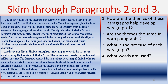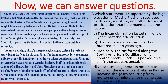When you skim through the passage, look at the organizational structure. How are the themes of these paragraphs helping to develop paragraph one? Are the themes the same in both paragraphs? What is the premise of each paragraph? What specific words are used? So the question is: which statement is supported by the sentence 'The high elevation of Machu Picchu is saturated with dew, moisture, and other forms of precipitation that help magma become cooler'?